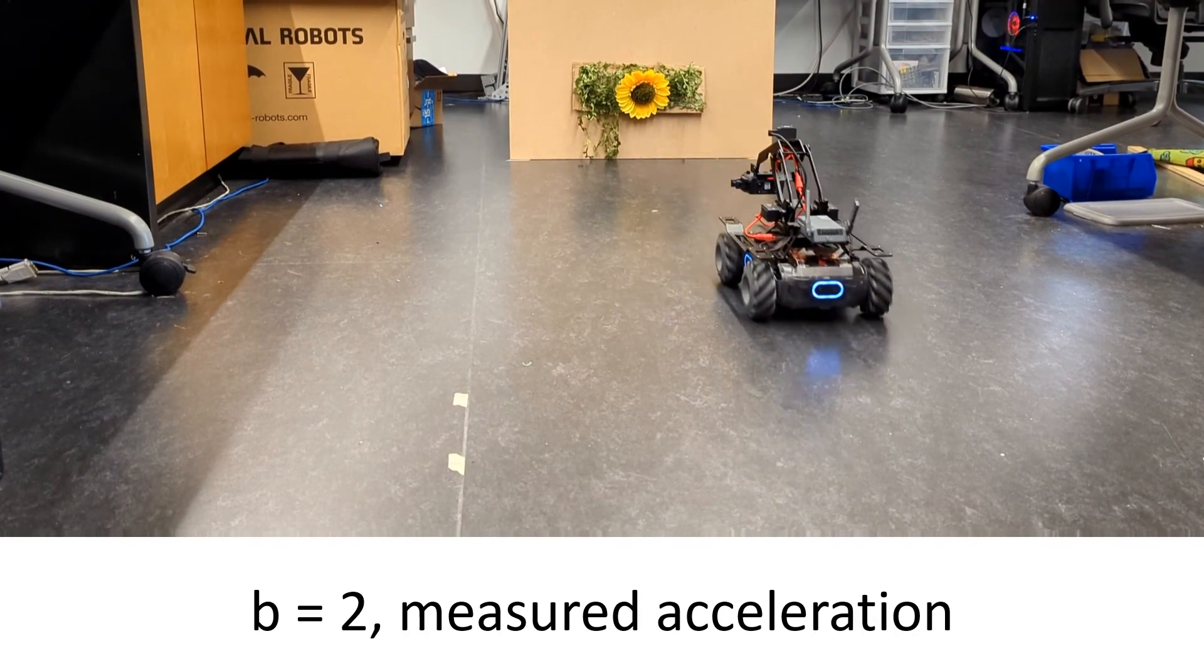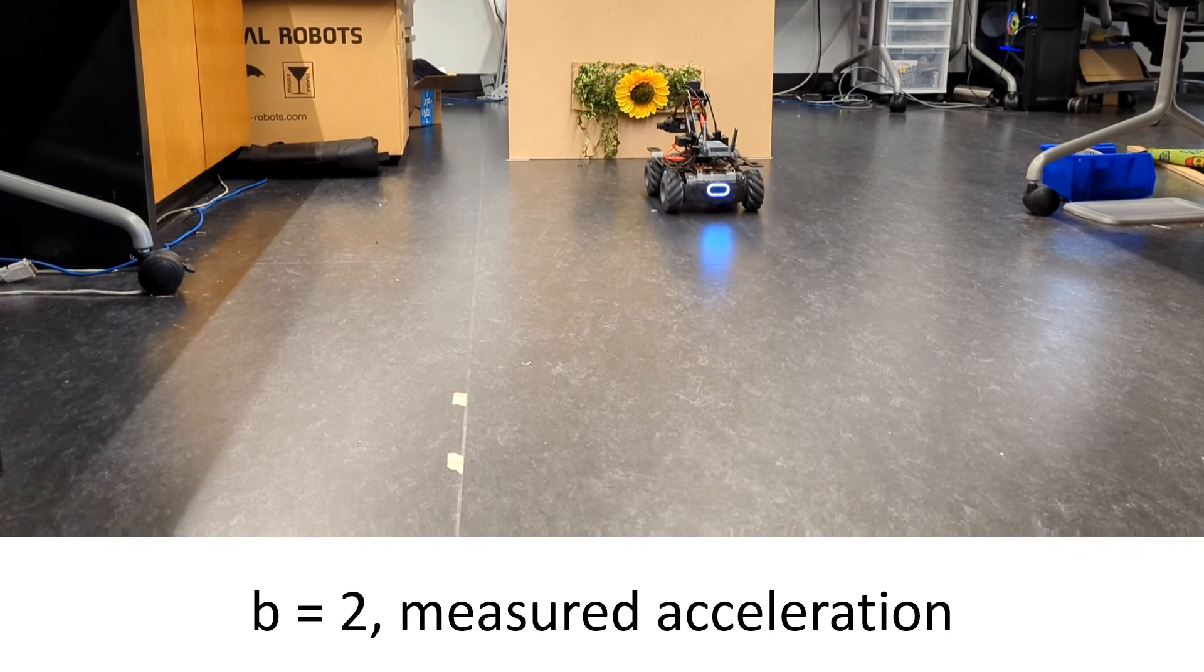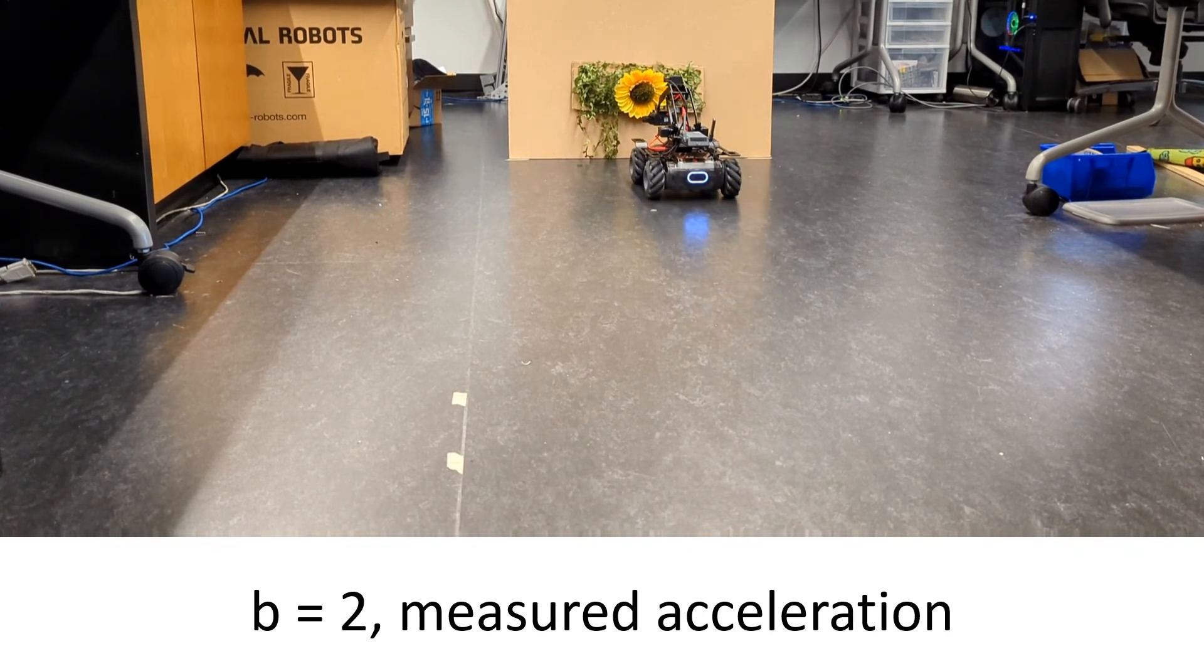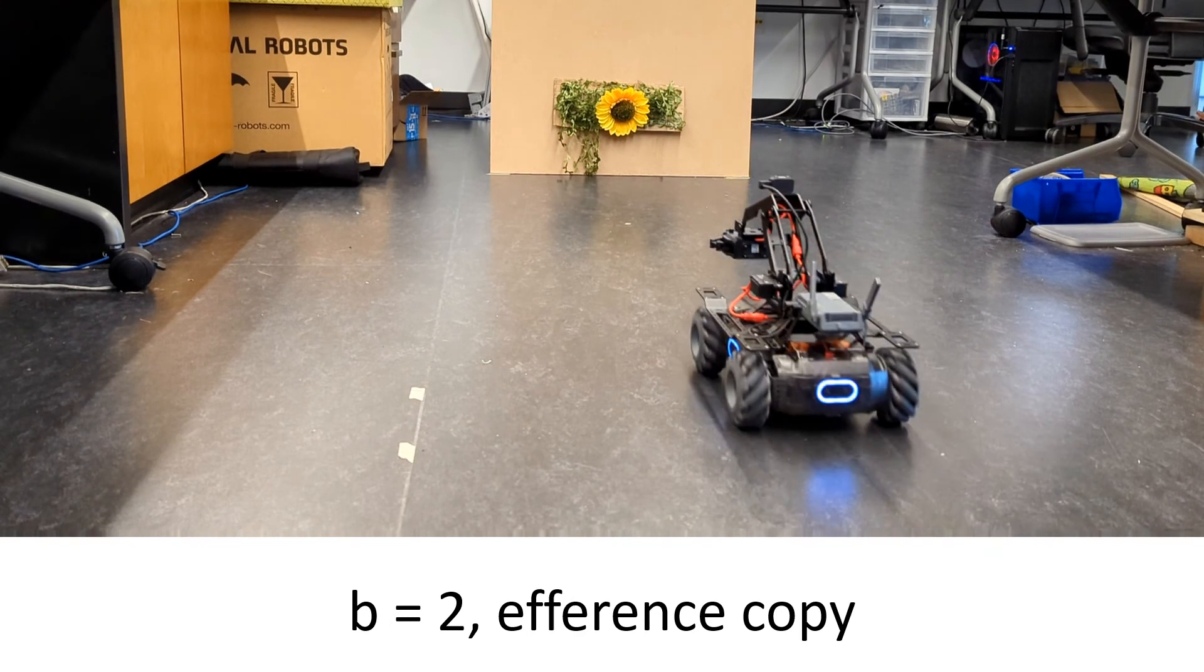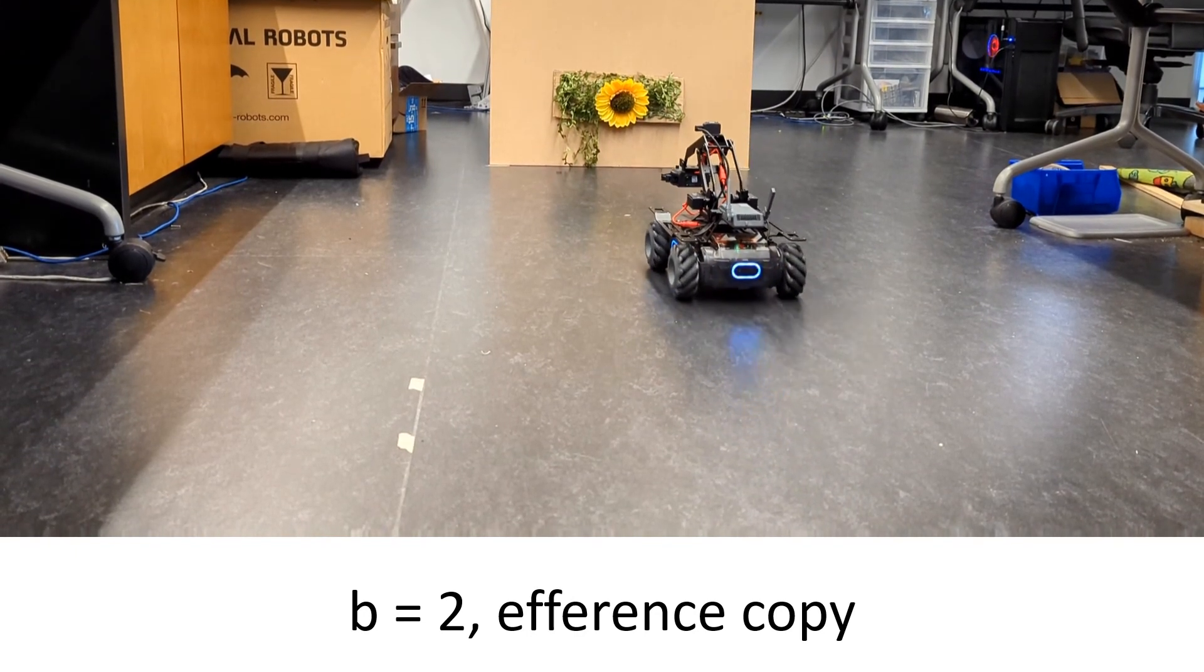However, when the unknown gain is increased to 2 and measured acceleration is used, the robot begins to oscillate as is typical of a poorly tuned controller. On the other hand, when efference copies are used with our constraint, the robot remains stable.